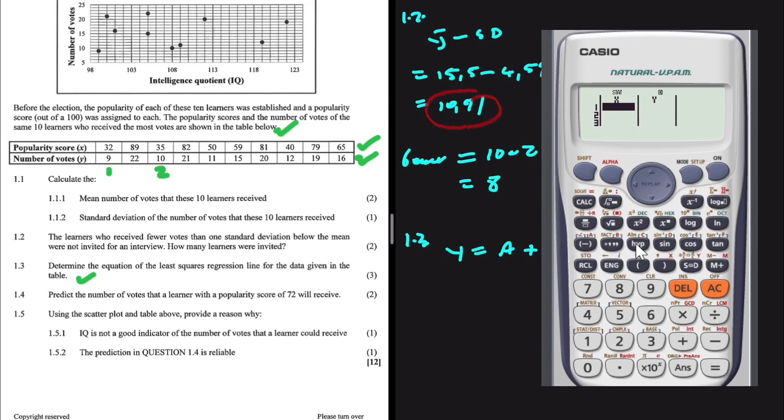We're going to start with the x values. As far as the x values are concerned, we have 32, 89, 35, not 32, but 82. Right, 50, 59, 81, 40, 79, 65. Right, now I have to go ahead and punch in the y values. So let me go up to the first x value. So you have to punch in the y value close to its corresponding x value.